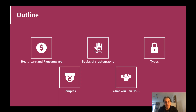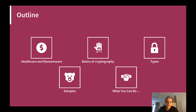In the presentation I'll outline an example of healthcare and ransomware, showing that every single industry is affected by ransomware in some way — healthcare probably as much as any other. Then I'll cover the basics of cryptography: how it works, why it is such a great tool for privacy and identity, but how it can be flipped against us. Then we'll look at some basic types of ransomware, some samples, and finally what we can do to address the problems.